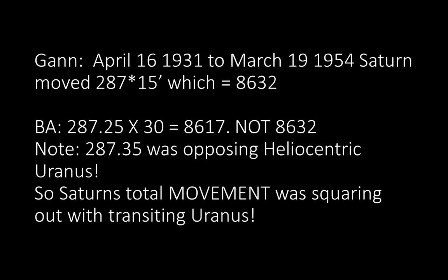287.25 times 30 equals 8,617, not 8,632. Note that 287.35 was opposing heliocentric Uranus. So Saturn's total movement was squaring out with transiting Uranus — a very unique concept. We've taken the 287.25 and looked at it on the zodiac, and it comes out to about just below 17.5 Capricorn. If you look on March 19, 1954, you'll see that that position is opposed by transiting Uranus.